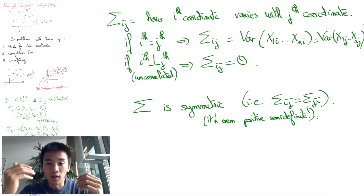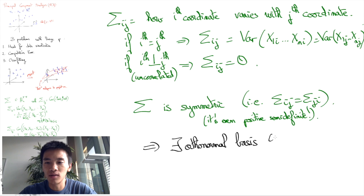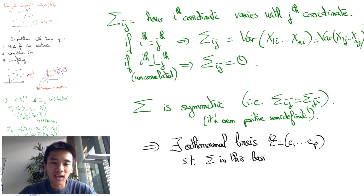Euclidean geometry tells us that this implies the existence of an orthogonal basis e1 until ep, such that when sigma is written in this orthonormal basis, sigma is then a diagonal matrix.